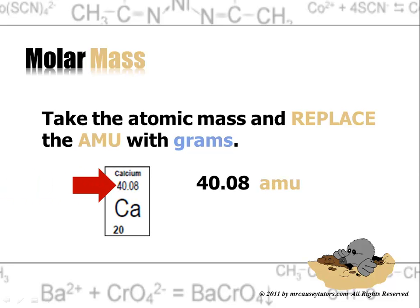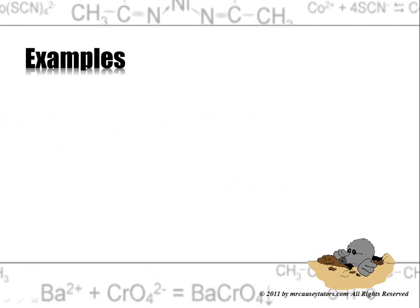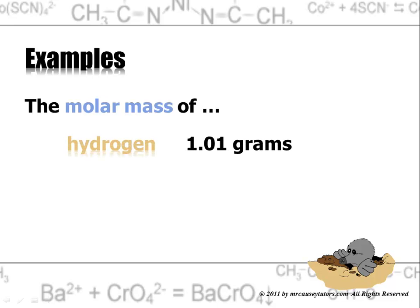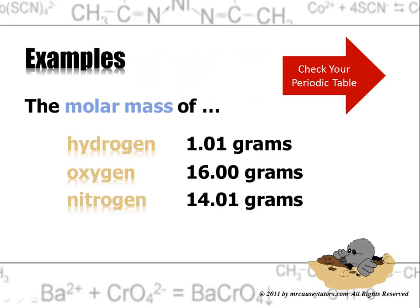Calcium is 40.08 AMUs. Its molar mass would be 40.08 grams. The molar mass of hydrogen is 1.01 grams. Now I just got it off the periodic table, 1.01 AMUs. So why not 1.01 grams. Oxygen, 16 grams. Nitrogen, 14.01 grams. Just check your periodic table and you'll get it every time.